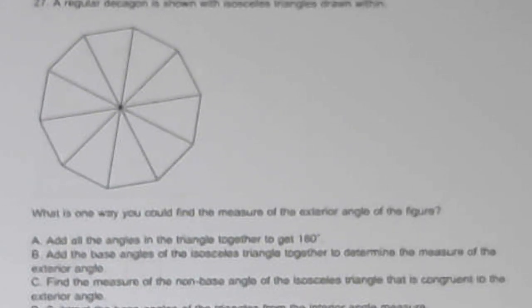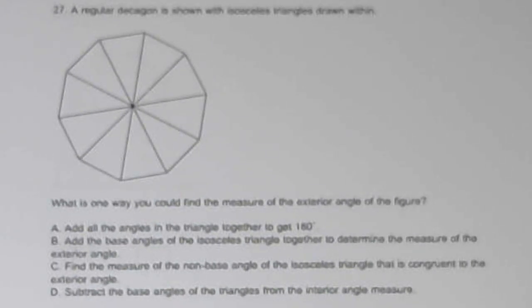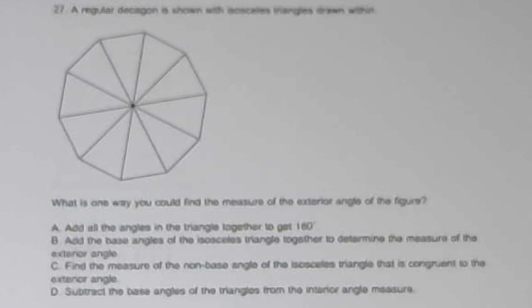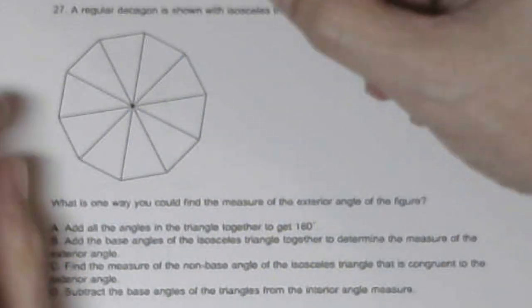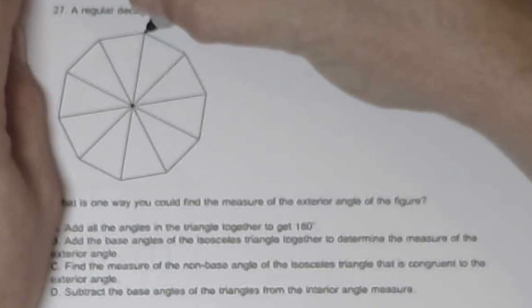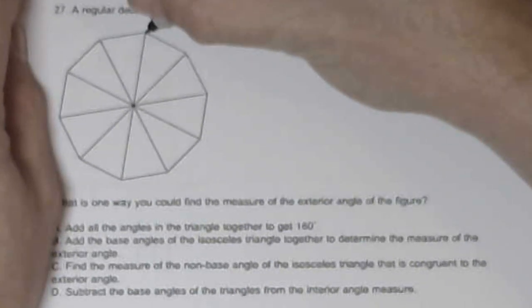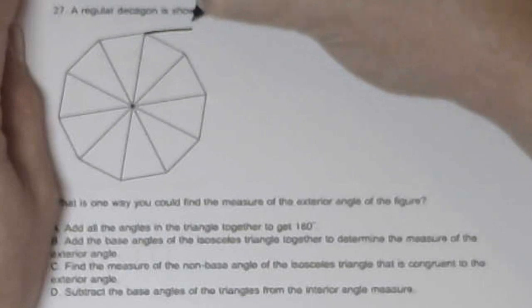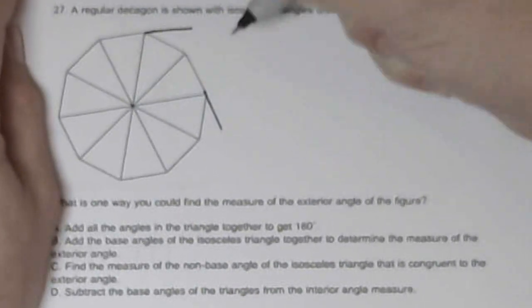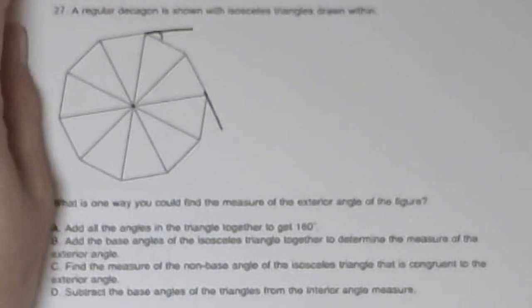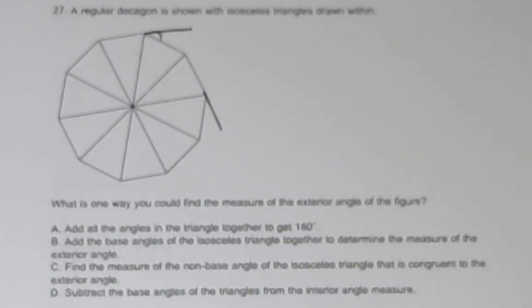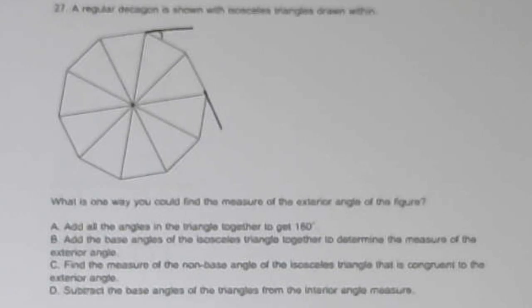Let me back out. A regular decagon is shown with isosceles triangles drawn within. What is one way you could find the measure of the exterior angle at the figure? Questions like these, I'd much rather them ask, what is the exterior angle? So the exterior angle is, if I basically continue this, or any one of them, I could do it down here. This would be the exterior angle.